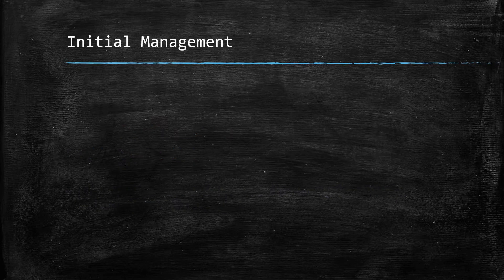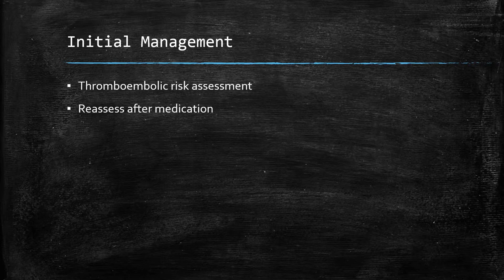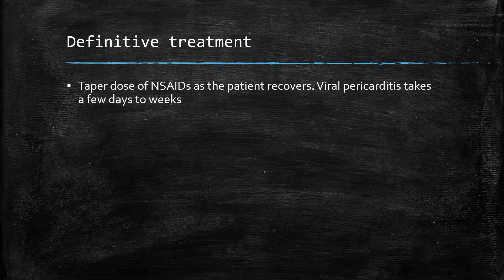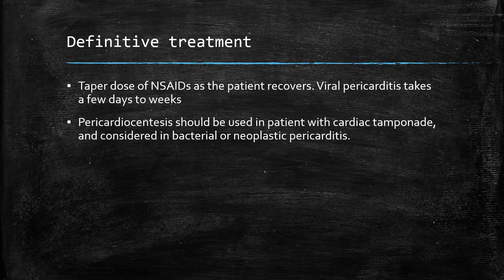Assess the risk of the patient developing clots and reassess after medication. Definitive treatment includes tapering the NSAIDs as the patient improves. It takes a few days to a few weeks for a patient to improve with viral pericarditis. Pericardiocentesis is mandatory in a patient with cardiac tamponade and should be considered in bacterial or neoplastic pericarditis.